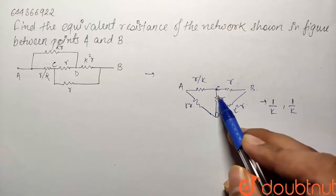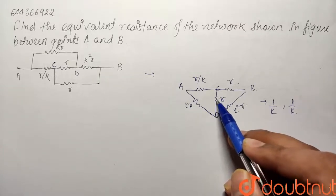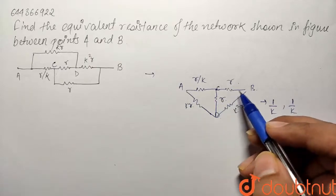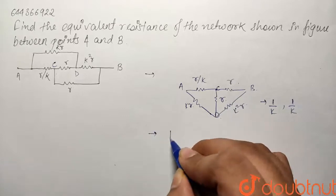So no current is going to pass through this resistance that is the middle one. So this resistance can be put out of the circuit as it will make no difference.